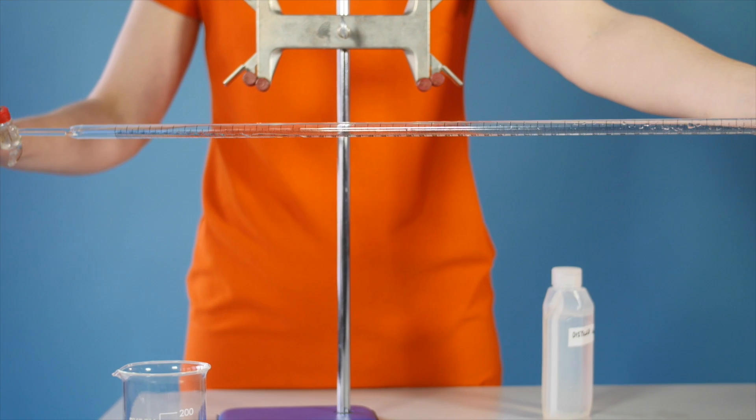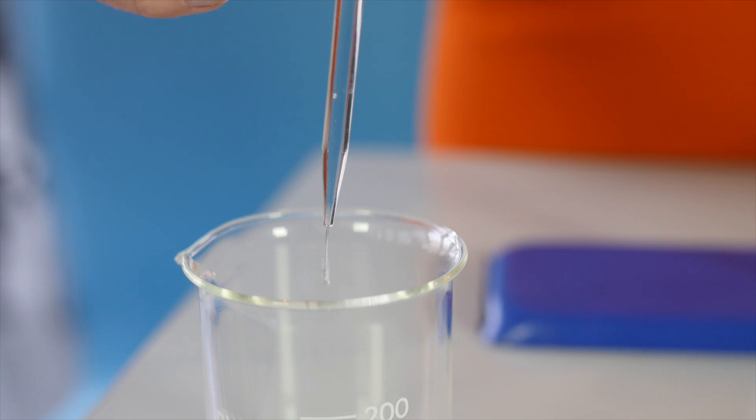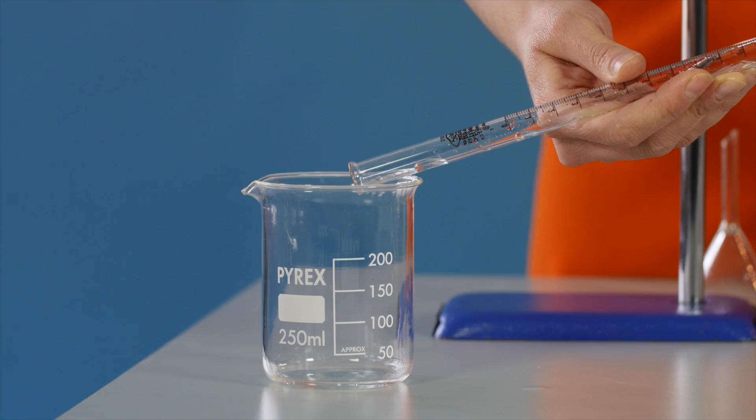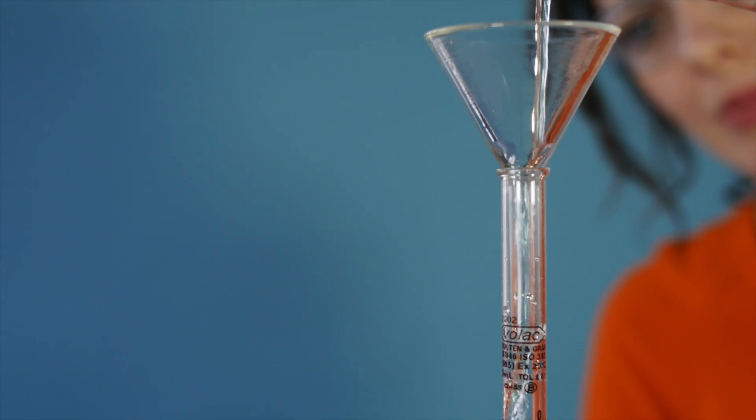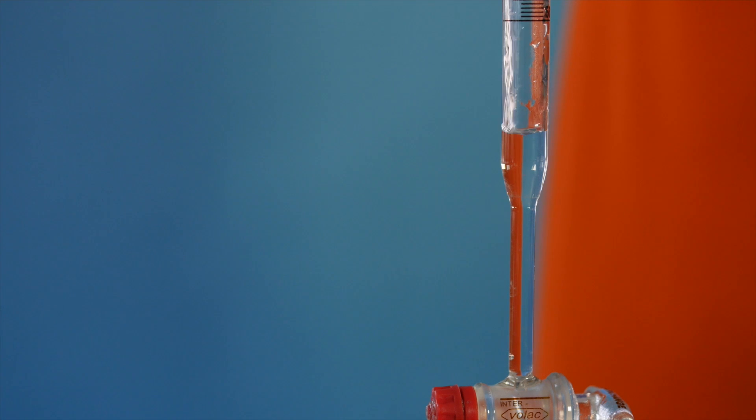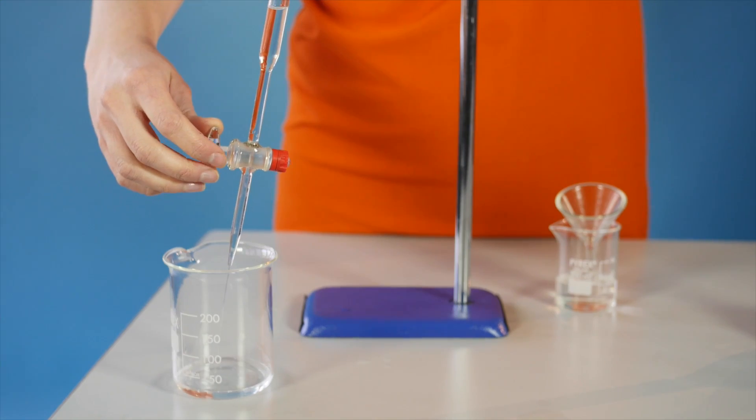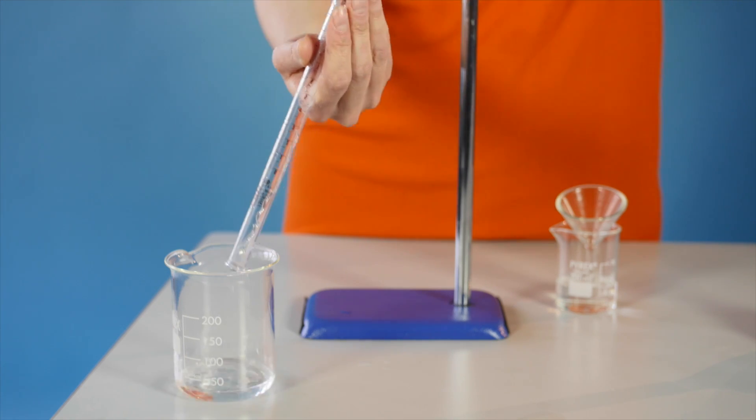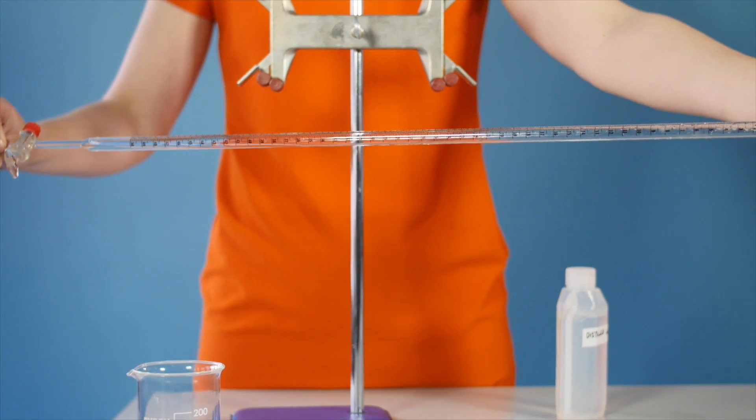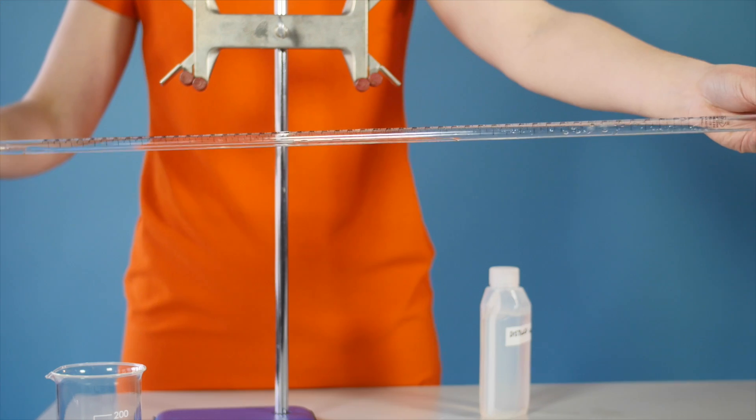Rinse the burette several times with distilled water. Using the funnel, add a little of the sodium carbonate solution to rinse through the burette above and below the tap. Discard the rinsings and repeat the step two more times. This makes sure that you do not dilute the solution when you fill the burette.